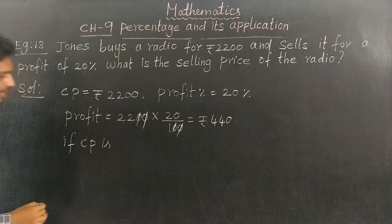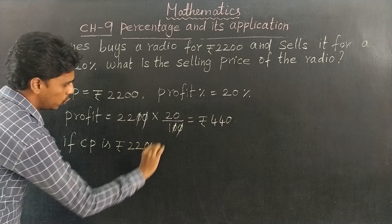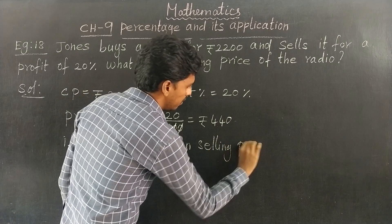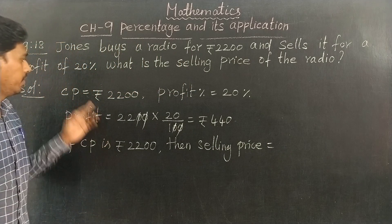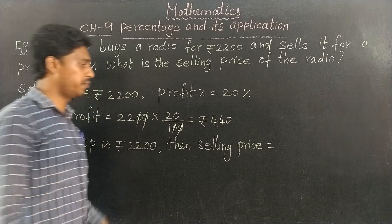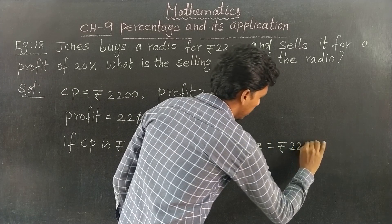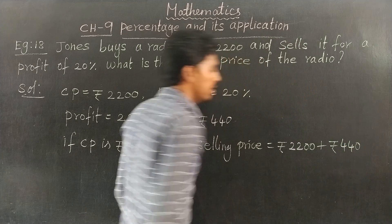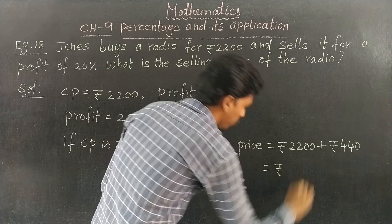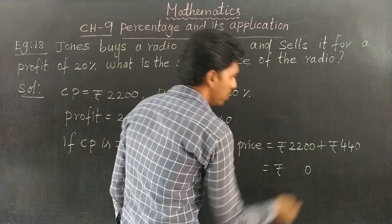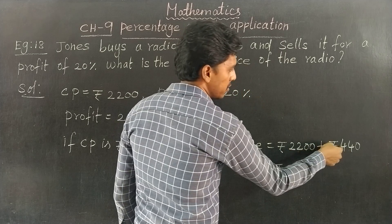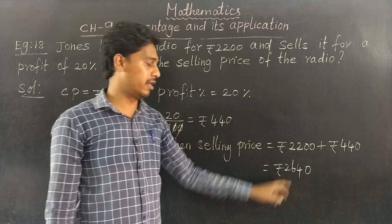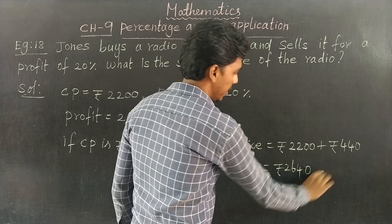If CP is Rs. 2200, then selling price equals cost price plus profit. 2200 plus 440 equals 2640 rupees. This is the selling price.